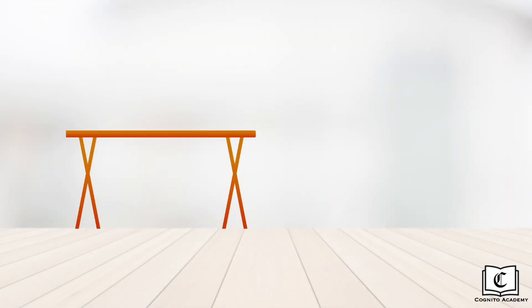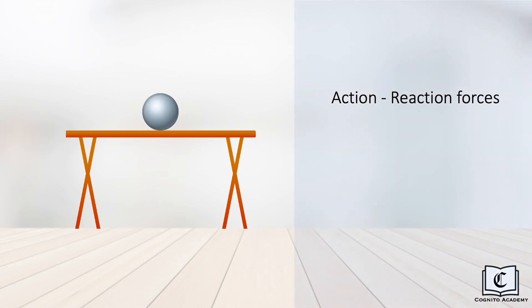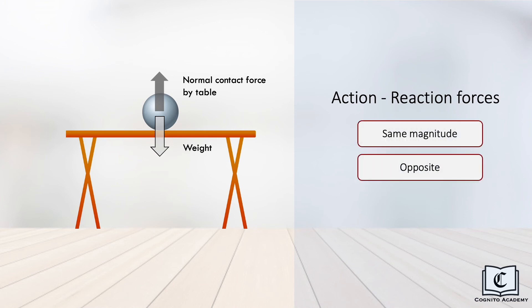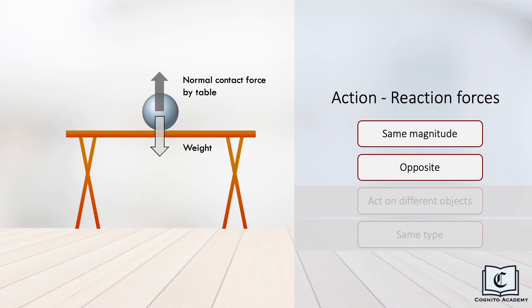In another scenario, a ball is resting on the tabletop. Let's identify the action-reaction forces present. Forces acting on the ball are its weight and the normal contact force exerted by the tabletop. Are they action-reaction forces? Checking against the four characteristics: both forces have equal magnitude and are opposite in direction. However, they do not act on different objects — both the weight and the normal contact force act on the ball, cancelling each other out. They aren't the same type of forces either, with weight being gravitational and normal force being a contact force. Hence, weight and normal force on the ball are not action-reaction pairs.